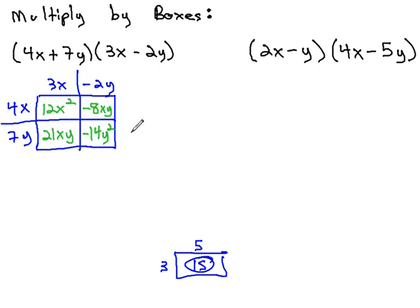We now can combine each of these terms to find our polynomial solution. As we do, we'll want to combine like terms as well, which we will find diagonal from each other. First, we have the 12x squared. Then, the diagonal like terms, which will be negative 8xy plus 21xy is positive 13xy. And finally, the last box has negative 14y squared.